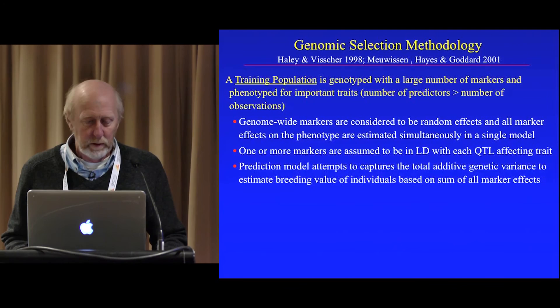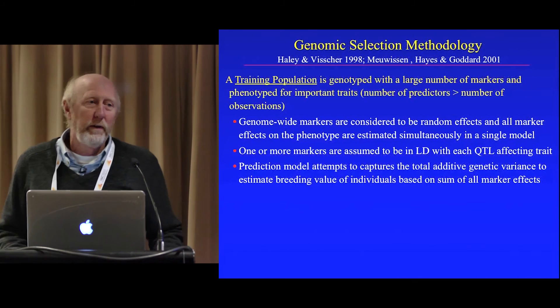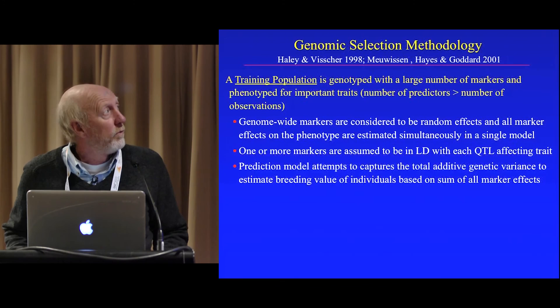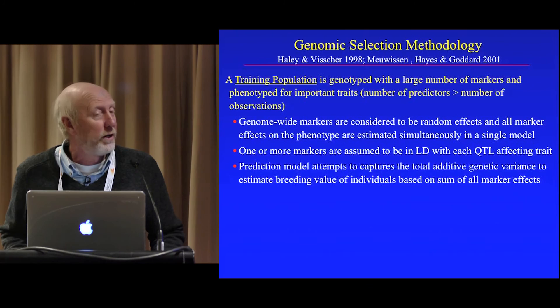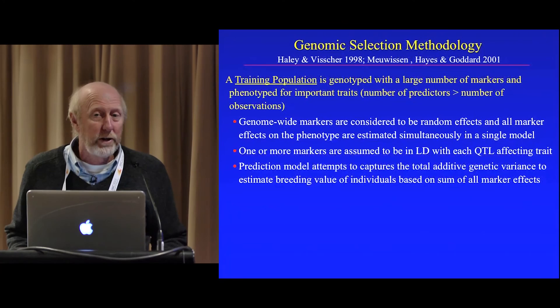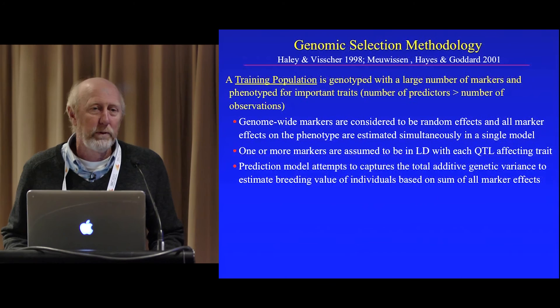In genomic selection, the predominant way of thinking about this is that there are two kinds of populations: a training population and a breeding or candidate population. Genomic selection was first introduced in a paper by Haley and Bisher back in 1998, but that's rarely cited. The paper most often cited is the Meuwissen, Hayes, and Goddard paper from 2001, because that paper really put forward the statistical and analysis protocols that were necessary for implementation.